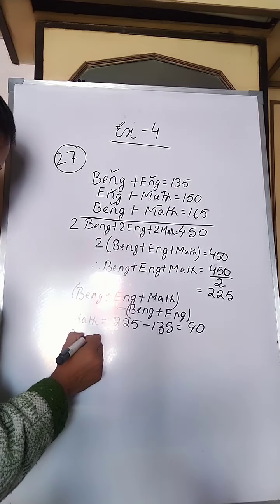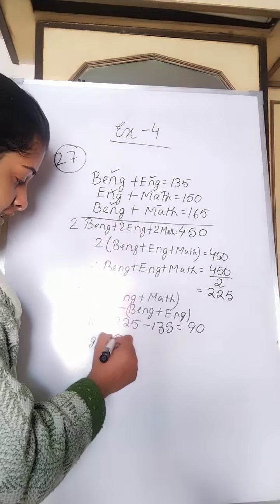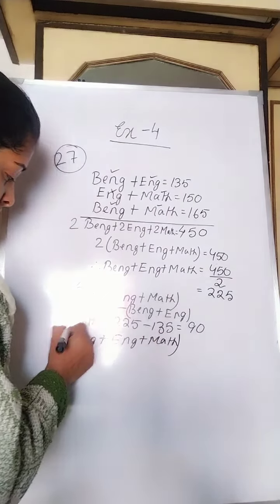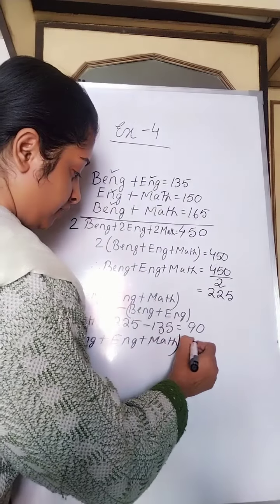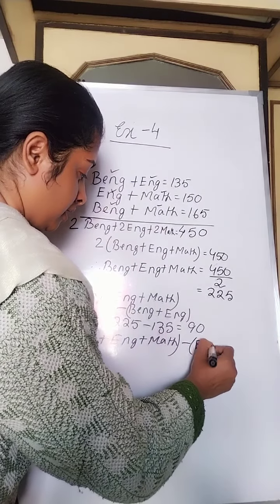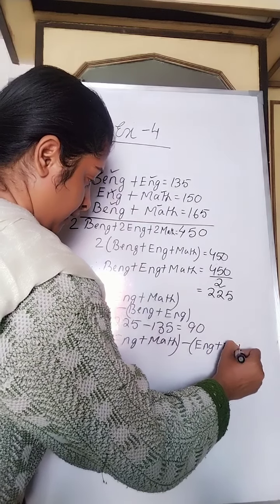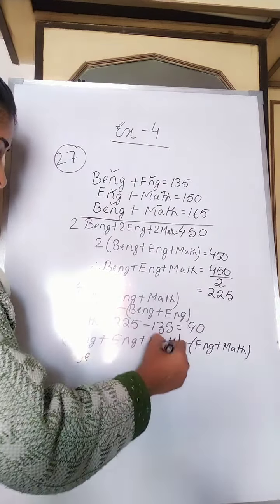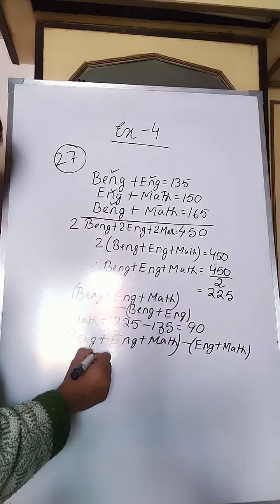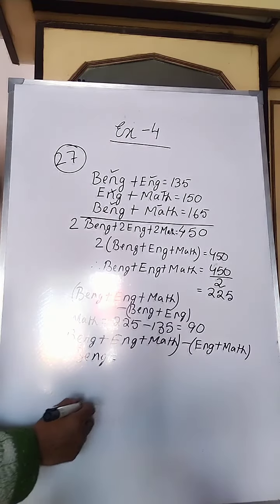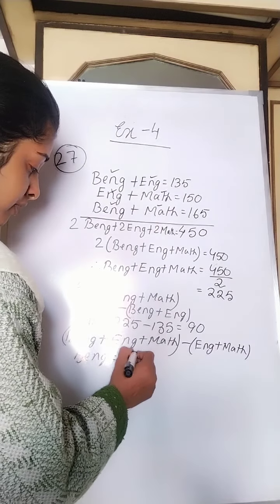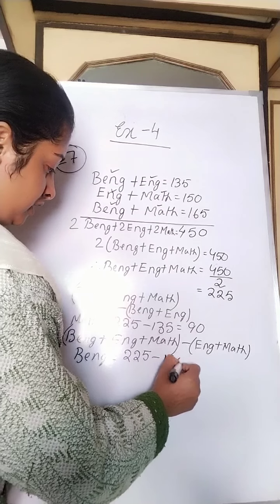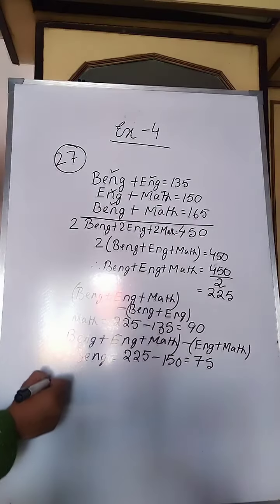Again, from the combination Bengali plus English plus Math, if you subtract English and Math, English and Math will cancel and you will get the number in Bengali. Bengali equals 225 minus 150, that is 75.